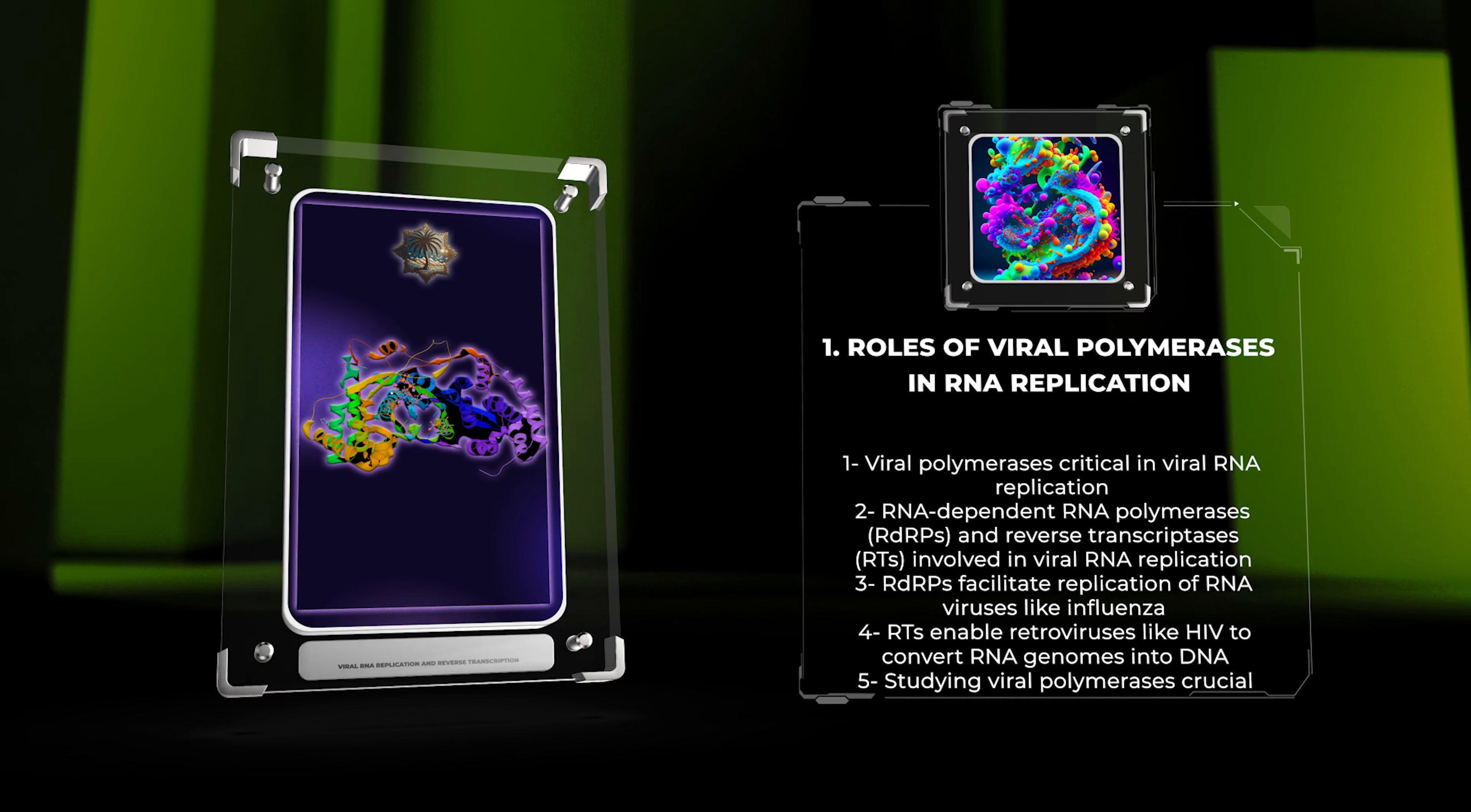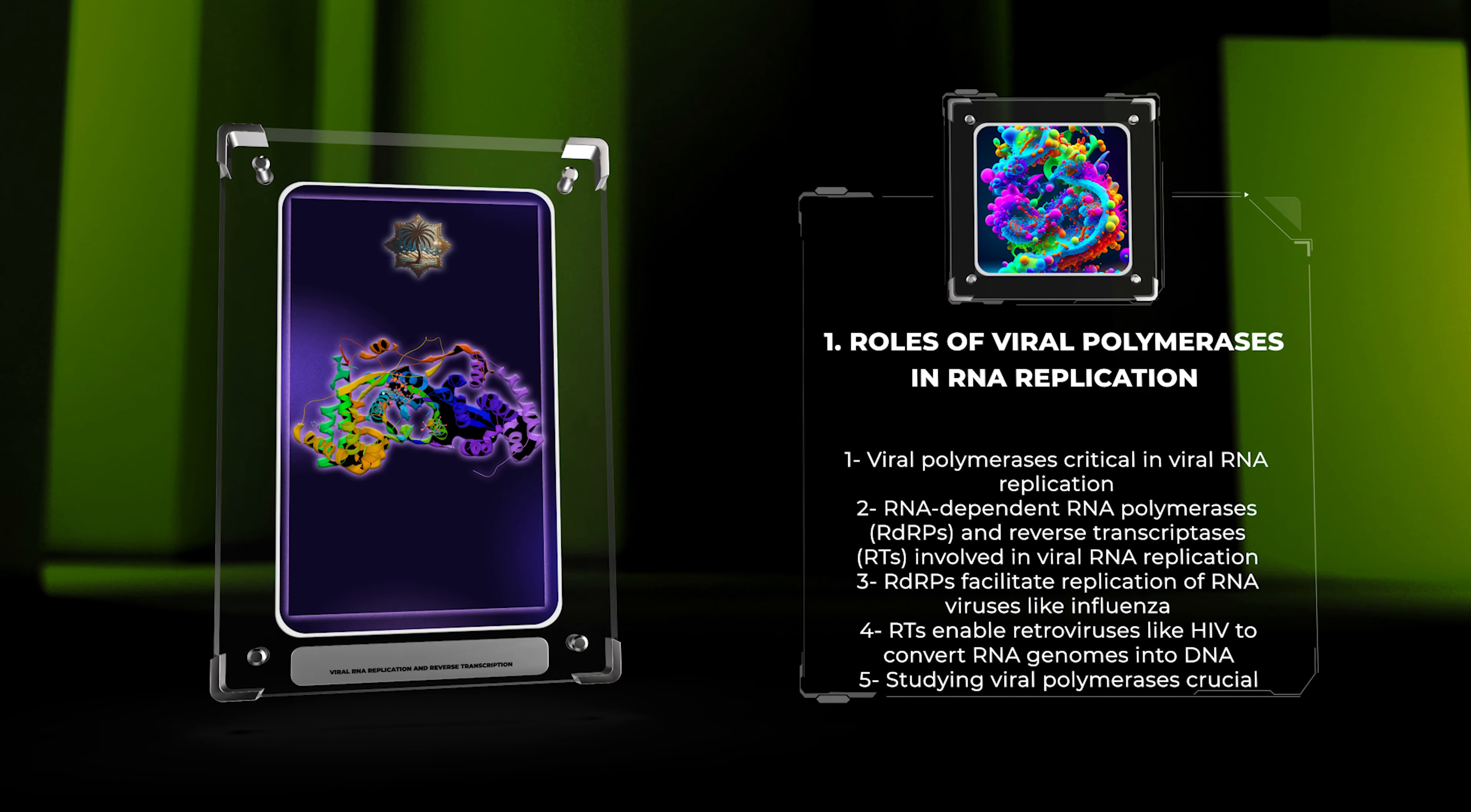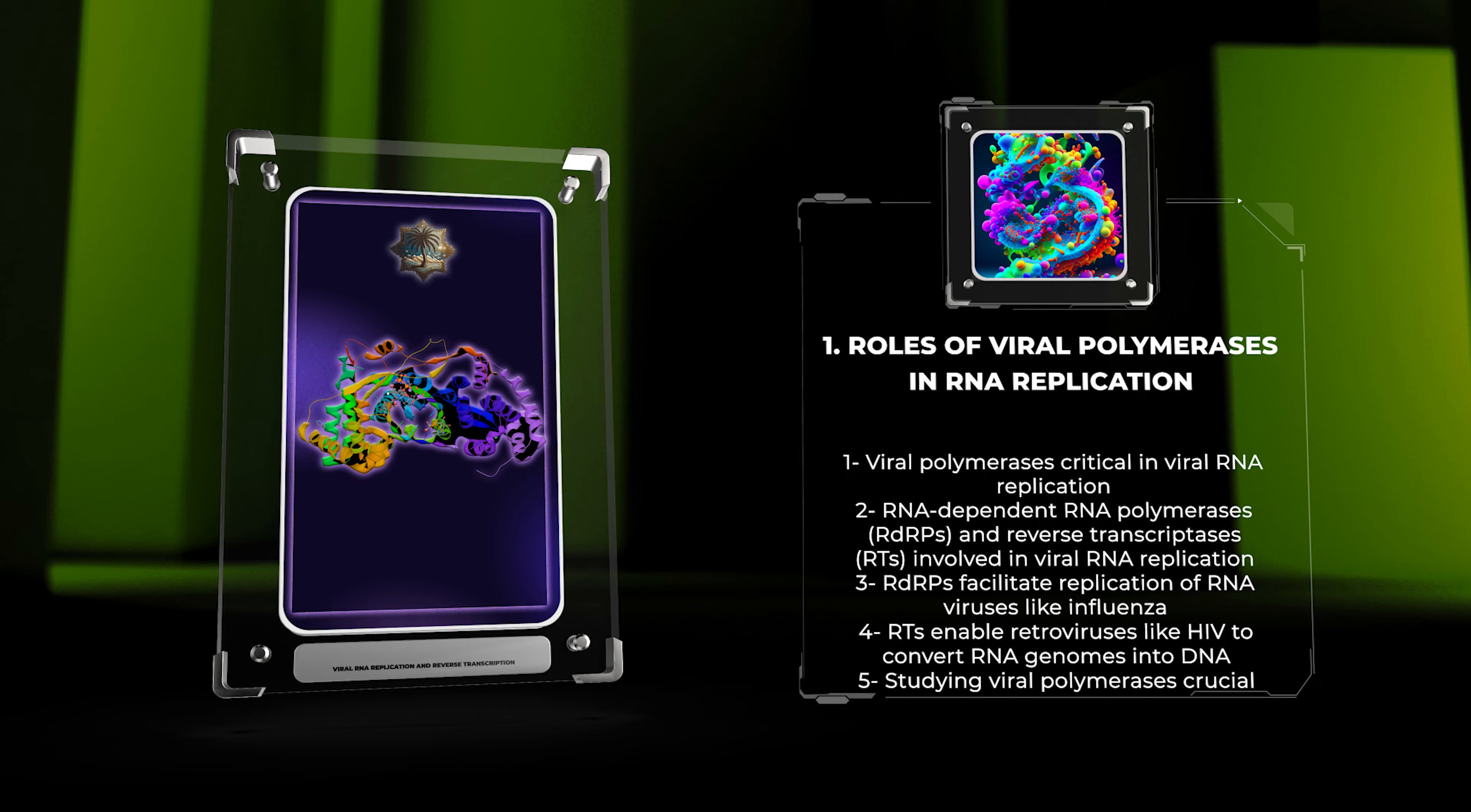RDRPs facilitate replication of RNA viruses like influenza, while RTs enable retroviruses like HIV to convert RNA genomes into DNA for integration into the host genome. Studying the mechanisms of these viral polymerases is crucial for designing effective antiviral treatments.